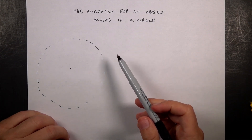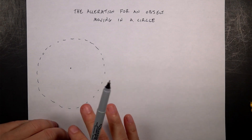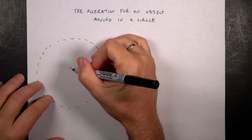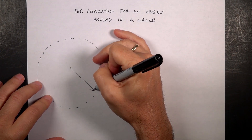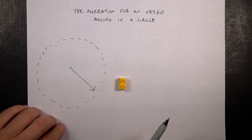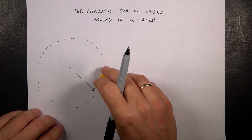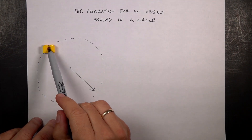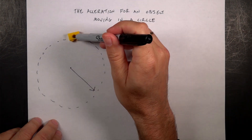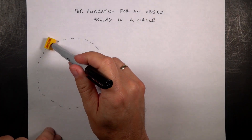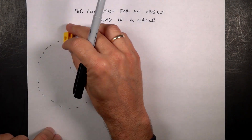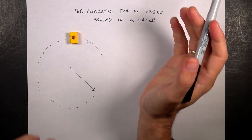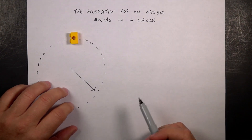Let's look at an object moving in a circle. Here I have a circle, and here's my object. Let's say this has a radius of some radius — we'll pick a value in a second. Imagine that this object is moving around in a circle with a constant speed. That means the magnitude of the velocity is constant. We call this circular motion, and we want to find the acceleration.